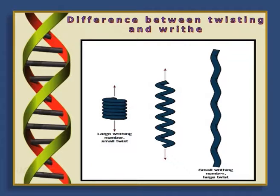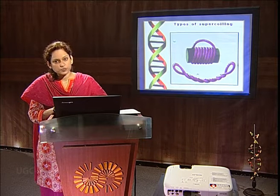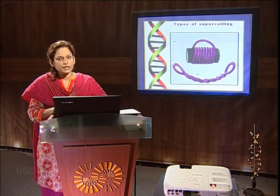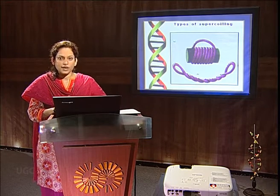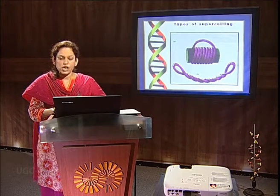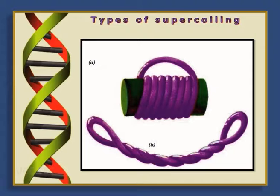The linking number can only be changed by breaking one or both phosphodiester backbones of the DNA double helix. Apart from positive and negative supercoiling, DNA can be supercoiled in two major forms: toroidal supercoiling and interwound supercoiling. Toroidal supercoiling takes place when DNA is wound around a cylinder, whereas interwound supercoiling takes place when the DNA is twisted upon itself.